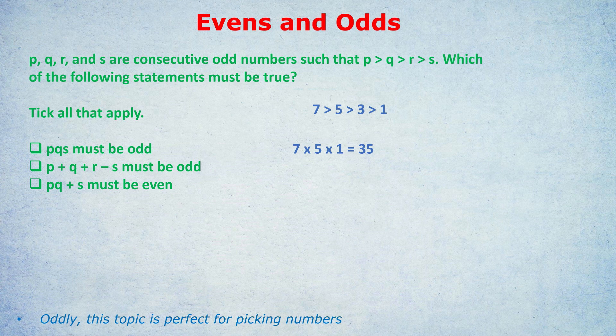Statement A is true. Second one — same thing, plug in our numbers. P plus Q plus R minus S gives 7 plus 5 plus 3 minus 1, which is 14. So B is not true — it must be even, not odd. Finally, for statement C — P times Q plus S — plugging in our numbers we get 7 times 5 plus 1, which is 36, and that's even. So statement C is true because C said PQ plus S must be even, and we do get an even answer.